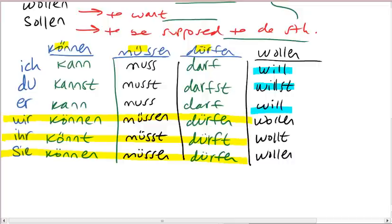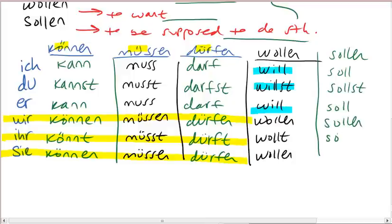And then we have sollen. Ich soll. Du sollst. Er, sie, es soll. Wir sollen. Ihr sollt. Sie sollen. So that one is pretty straightforward.